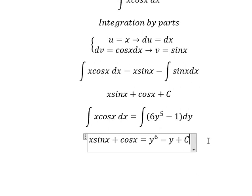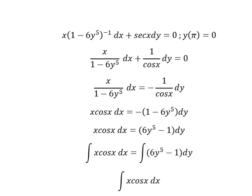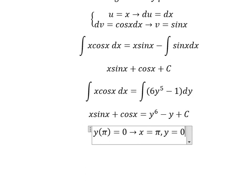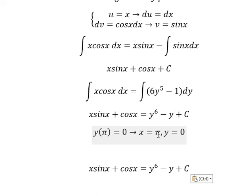And we put C. Now we have the conditions, that means when x equals π, y equals number 0. So we can put the value of π and number 0 here to find the constant.